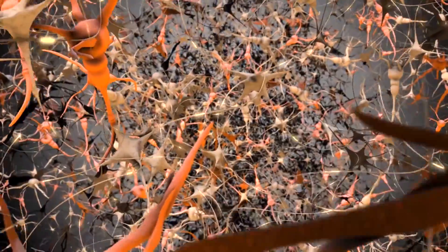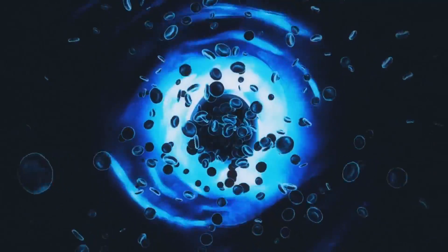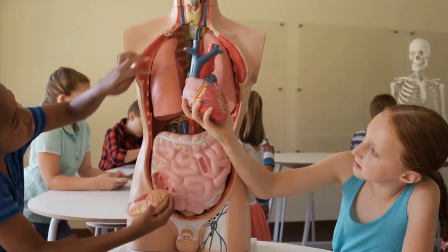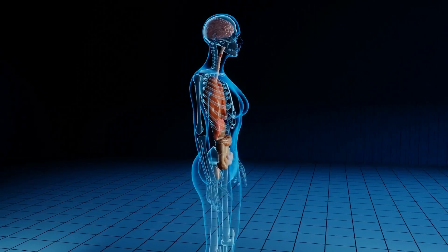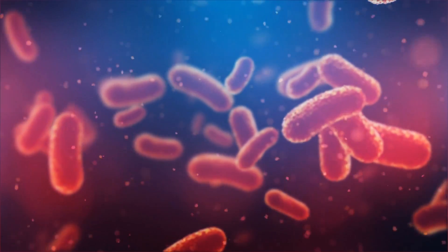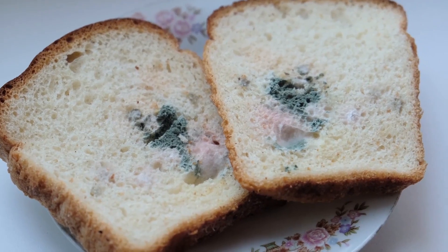The human immune system is a complex and highly sophisticated network of cells, tissues, and organs that work together to defend the body against a wide range of harmful pathogens, including bacteria, viruses, fungi, and parasites.